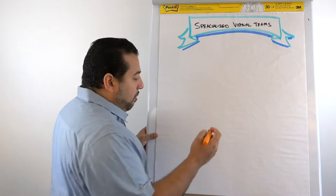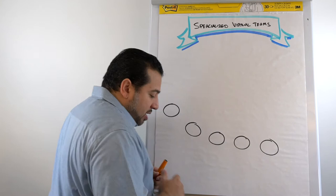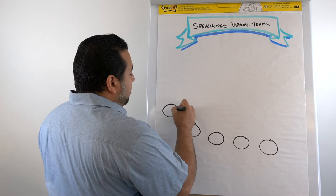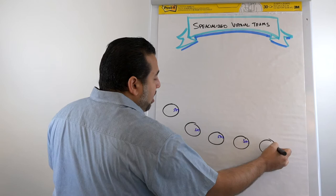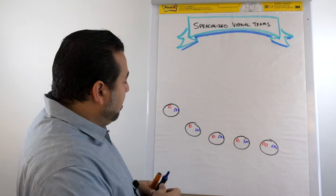Let's say we have five scrum teams. Each team has a scrum master and also has a product owner. We may be using a scaling technique, but for this example, we won't go into that.